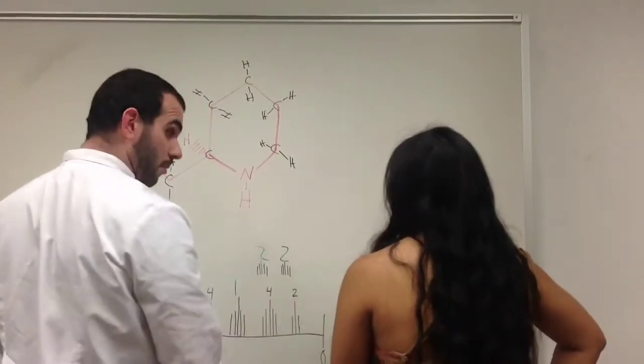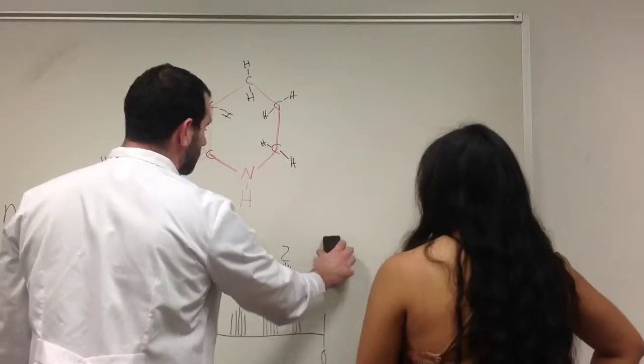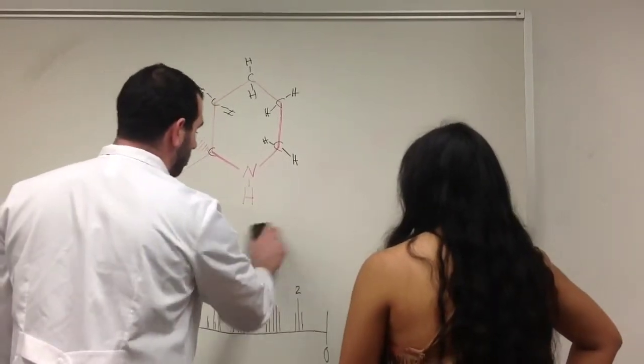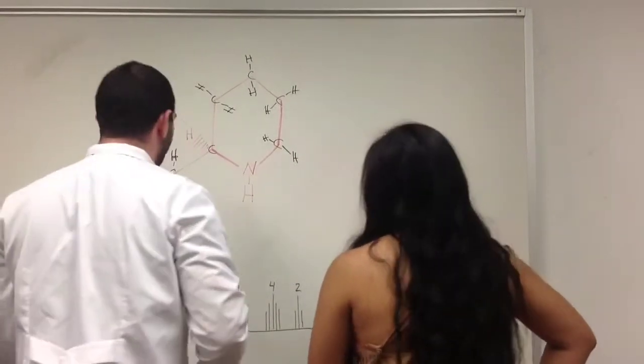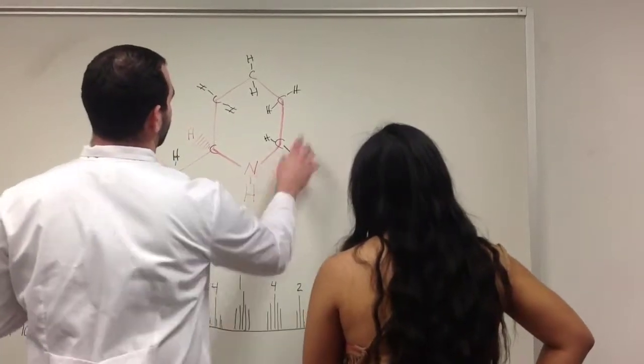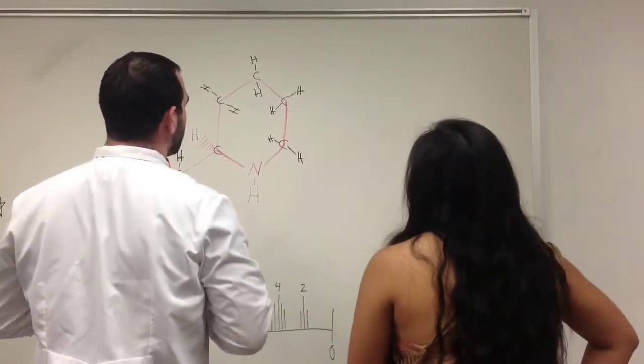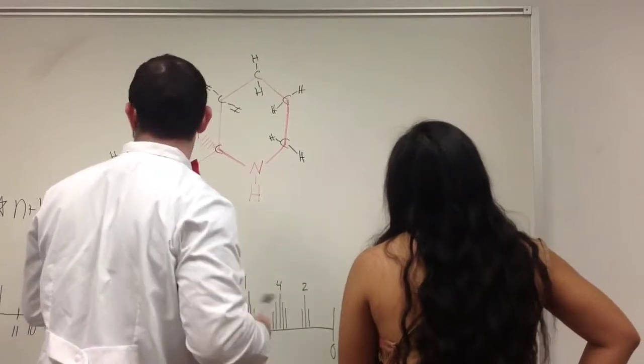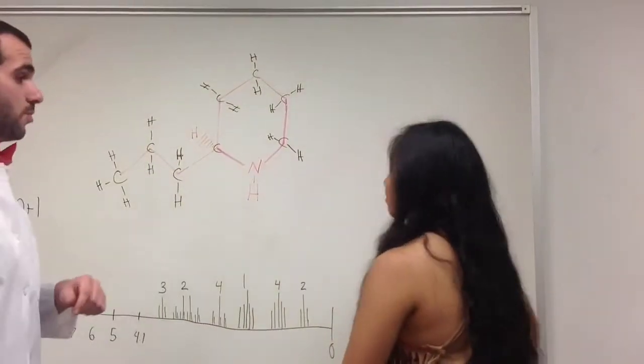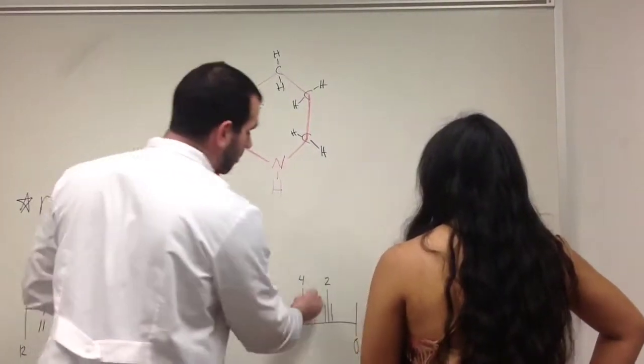So now, because in the NMR, it's going to show up in the same spot, we're going to erase that and it's going to become a 4. Now, finally, last and least, our last carbon here with 2 hydrogens directly attached to it, very simple, we're going to use our n plus 1 rule to give us 3, and we're going to end up with a triplet.